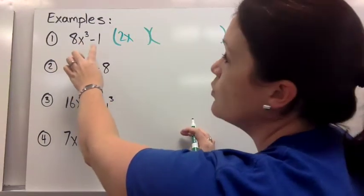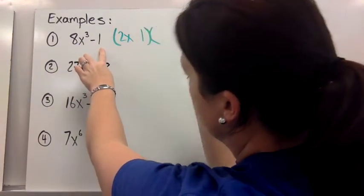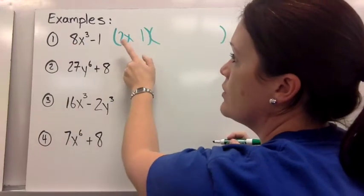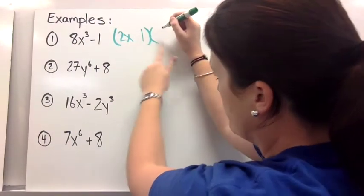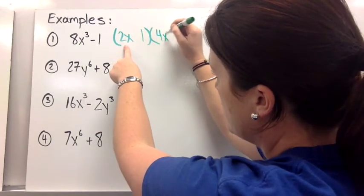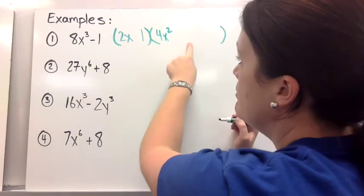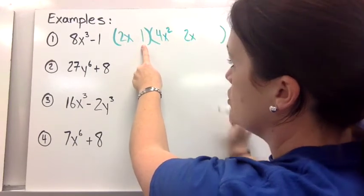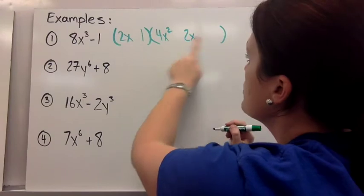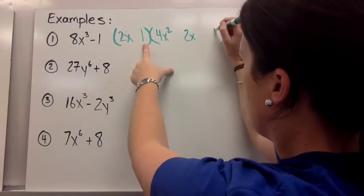The cube root of 8x cubed would be 2x. The cube root of 1 is 1. Then you square the first term in the binomial to get the first term in the trinomial. So 2x squared would become 4x squared. In the middle you multiply these two together. So 2x times 1 is just 2x.